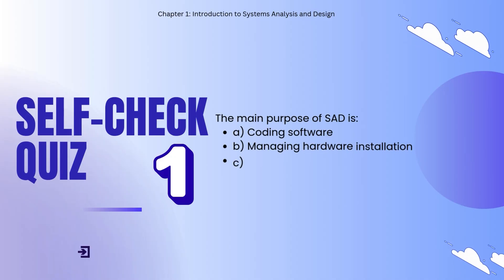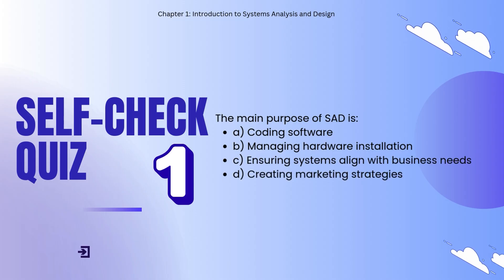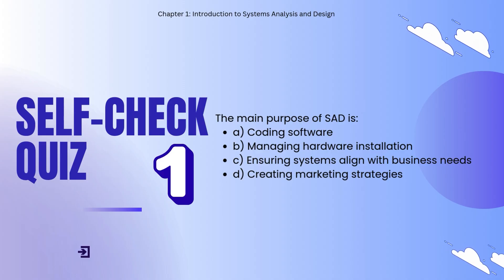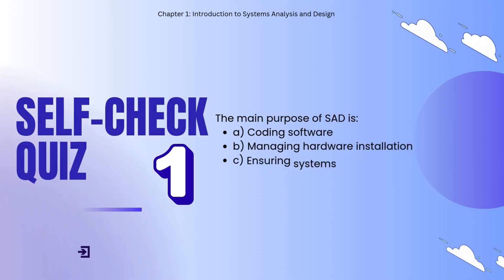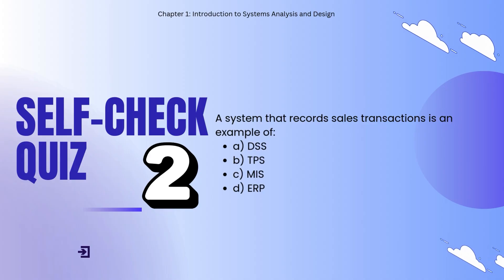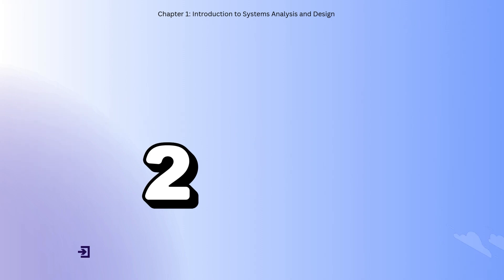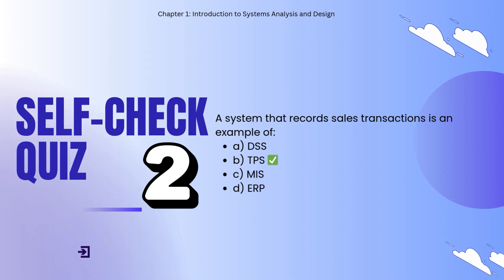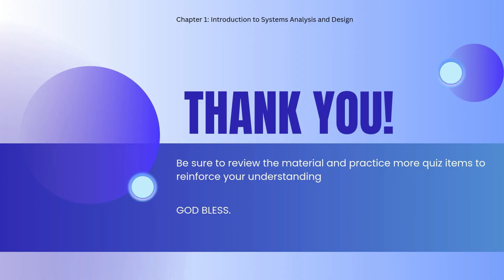Let's check your understanding with a quick quiz. Number 1: The main purpose of systems analysis and design is — A. Coding software, B. Managing hardware installation, C. Ensuring systems align with business needs, D. Creating marketing strategies. Question 2: A system that records sales transactions is an example of — DSS, TPS, MIS, or ERP. Be sure to review the material and practice more quiz items to reinforce your understanding. Thank you and God bless.